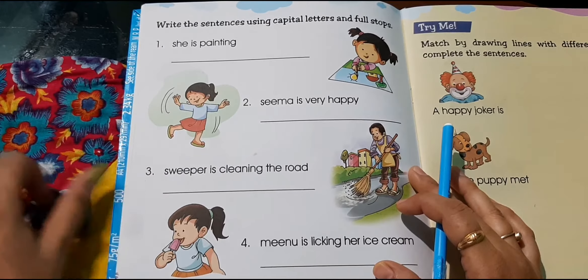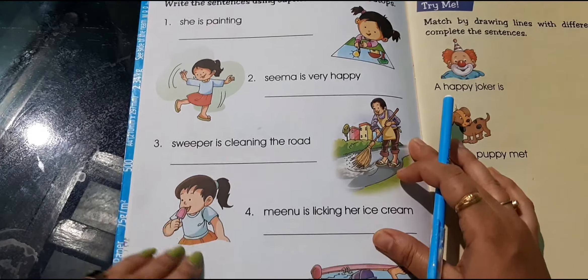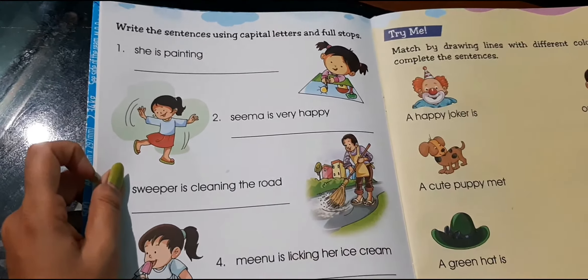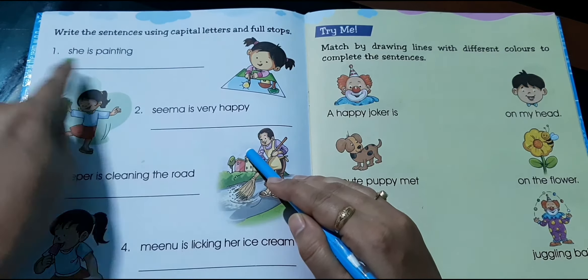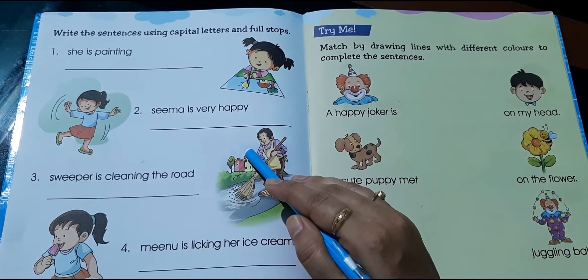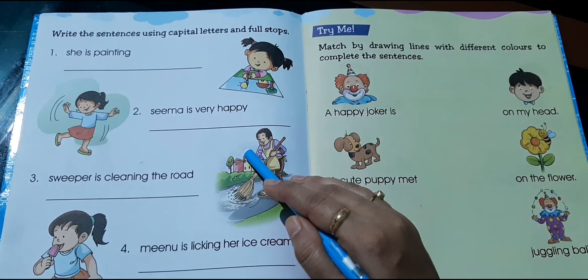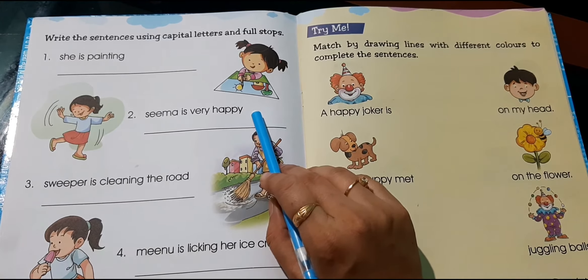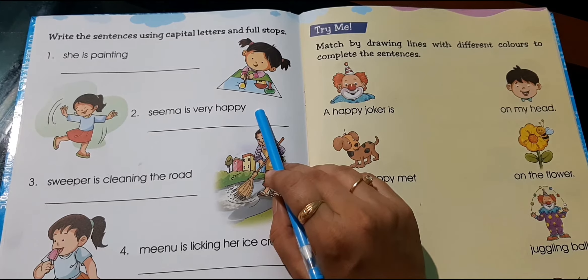Now, write the sentences using capital letters and full stops. Sentences are already given and you have to rectify them because the first letter is not capital and the full stop is also missing. So you have to put the full stop and use the capital letter in the correct place.